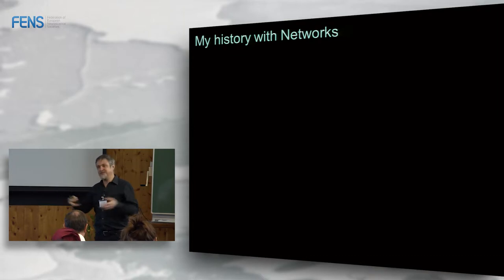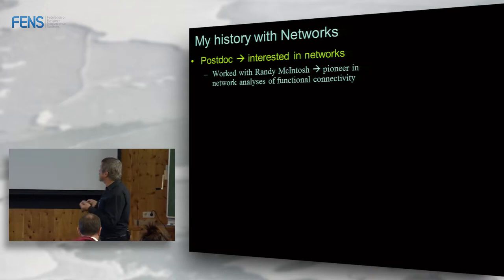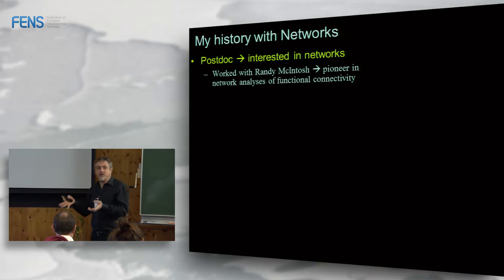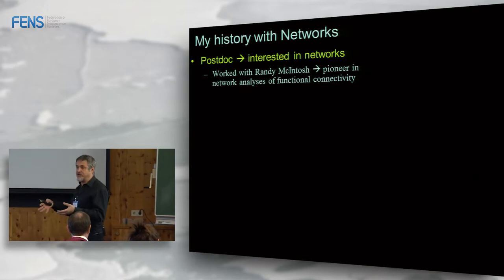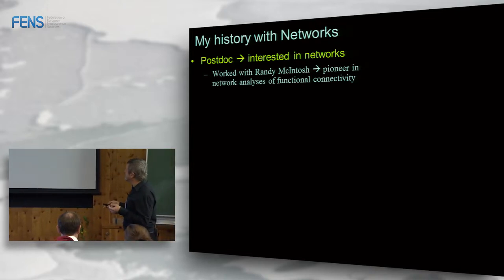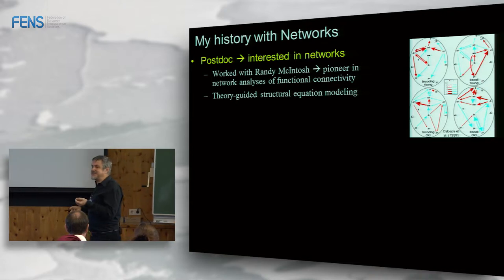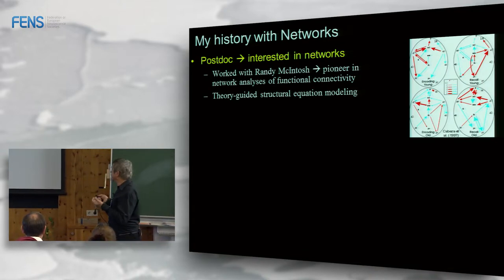Let me tell you briefly about my history with networks. When I was a postdoc with Randy MacIntosh — one of the main figures in network research — he was one of the first to apply structural equation modeling to PET data. We would do correlations across subjects, since PET didn't allow within-subject trial-level correlations as event-related fMRI does, and then apply structural equation modeling. I published this in 1997, when networks were not yet popular and people were focused primarily on brain regions.